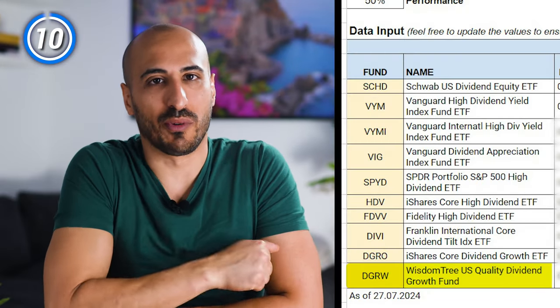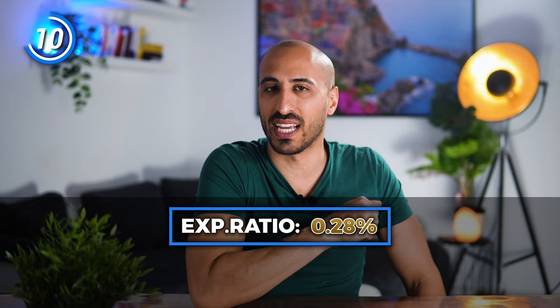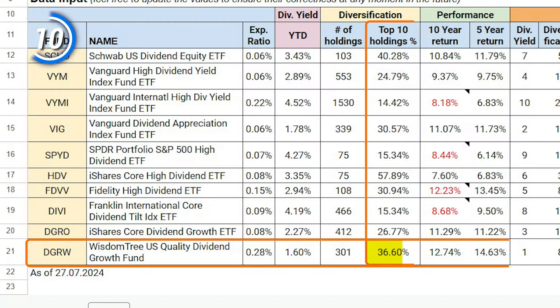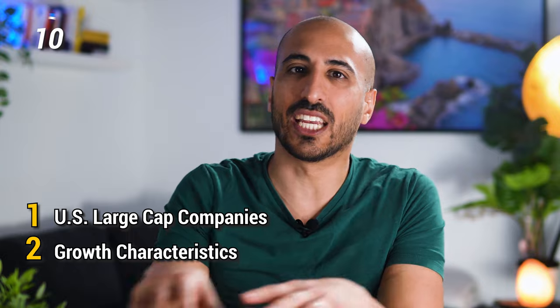The last ETF is DGRW, the WisdomTree US Quality Dividend Growth Fund. DGRW has a dividend yield of 1.6%, an expense ratio of 0.28%, and 301 holdings, with the top 10 weighing 36.6% of the portfolio. The average annual return has been 12.74% in the last 10 years and 14.63% in the last 5 — the highest return on this list. The ETF tracks the WisdomTree US Quality Dividend Growth Index, consisting of dividend-paying large-cap companies with growth characteristics.